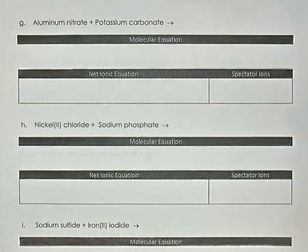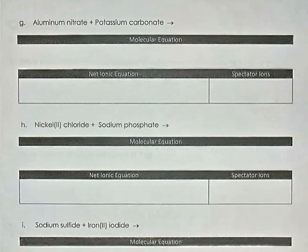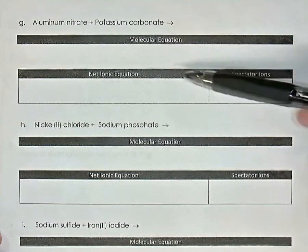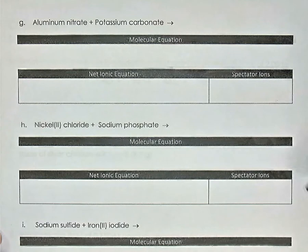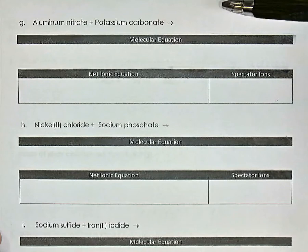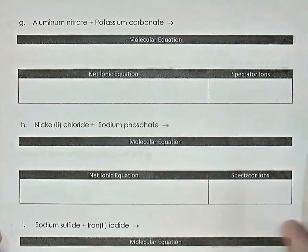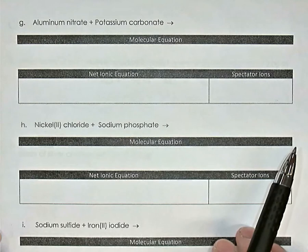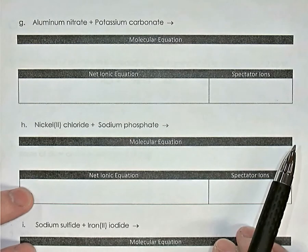In this video for grade 11 chemistry, we're looking at the solutions unit: how to write molecular equations, net ionic equations, and identify spectator ions in precipitation reactions. Pause the video as we go and try to fill in these things for yourself. The first question says a solution of aluminum nitrate is mixed with a solution of potassium carbonate — identify the products, write a balanced molecular equation, write the balanced net ionic equation, and identify spectator ions.